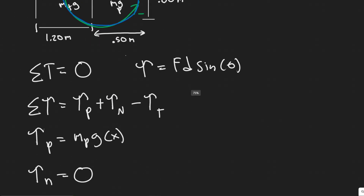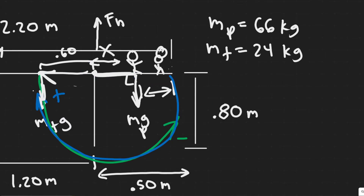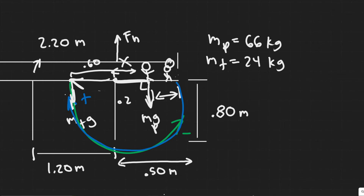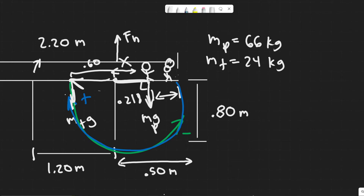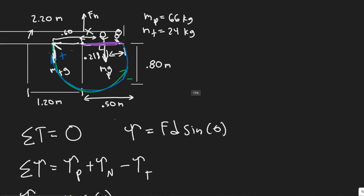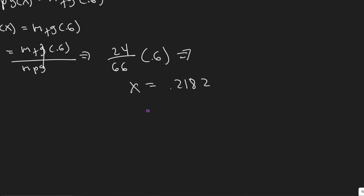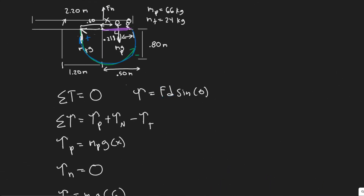Notice that they want us to solve for not the distance from the point of rotation - which is what our x value is - but the distance from the edge of the table. We know x is 0.218 meters. The overhang from the pivot to the edge is 0.5 meters. So we subtract: 0.5 minus 0.218 gives us 0.282 meters. That's the distance from the edge of the table.